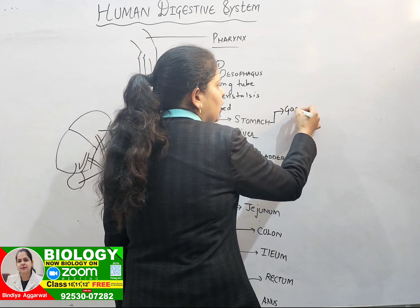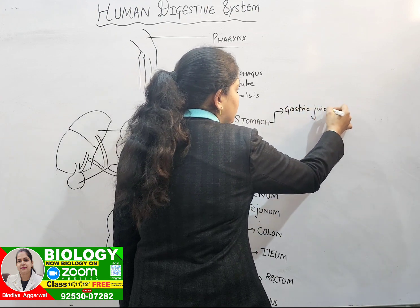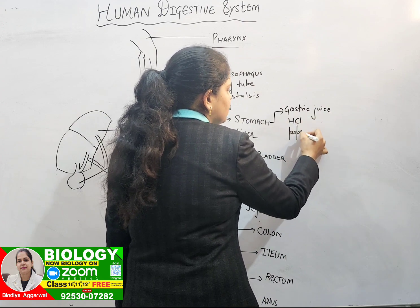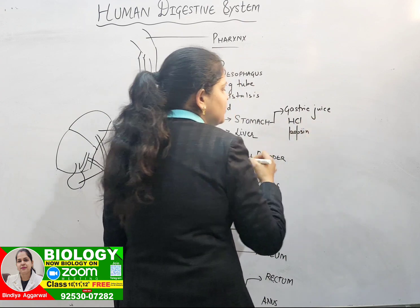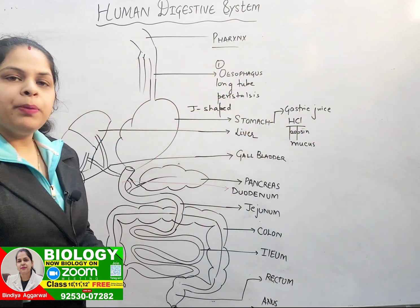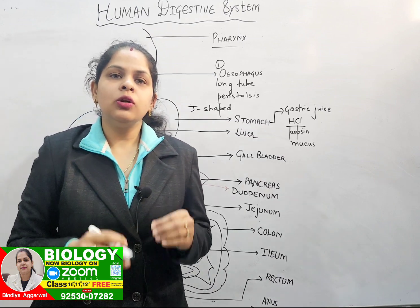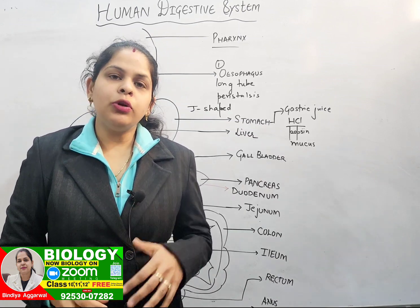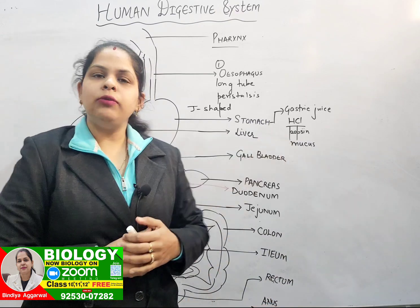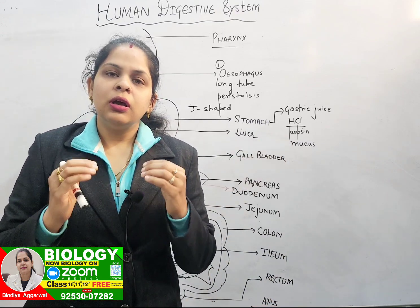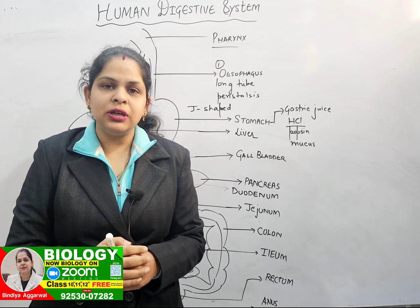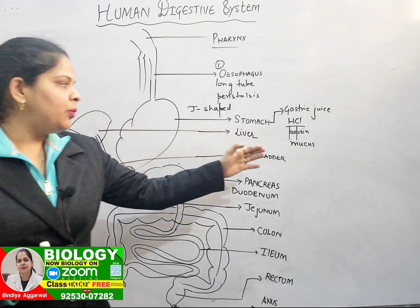Inside the stomach, gastric juice is secreted. This gastric juice contains HCl, pepsin (in the form of pepsinogen), and mucus. HCl kills the bacteria. Pepsin breaks down proteins into amino acids — protein is a complex food and amino acid is a simple food. Mucus protects the stomach wall from the action of HCl.